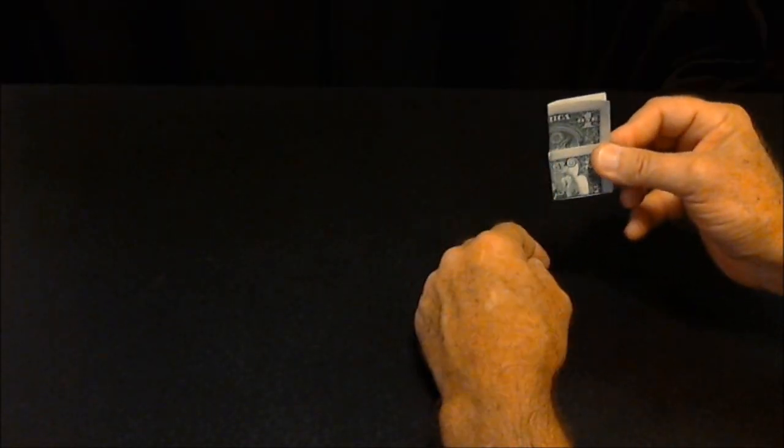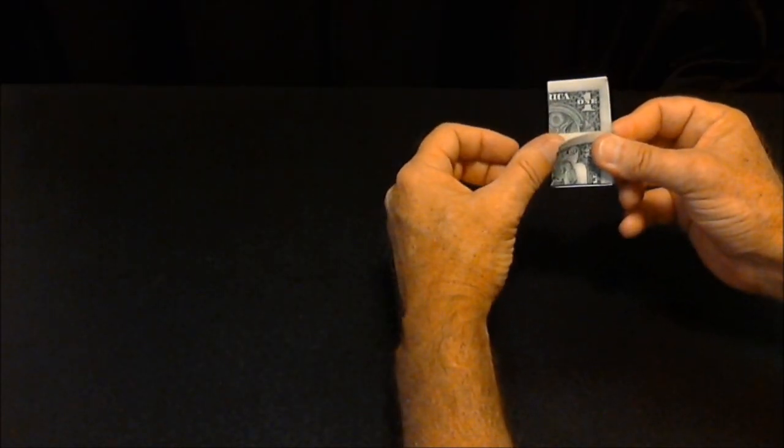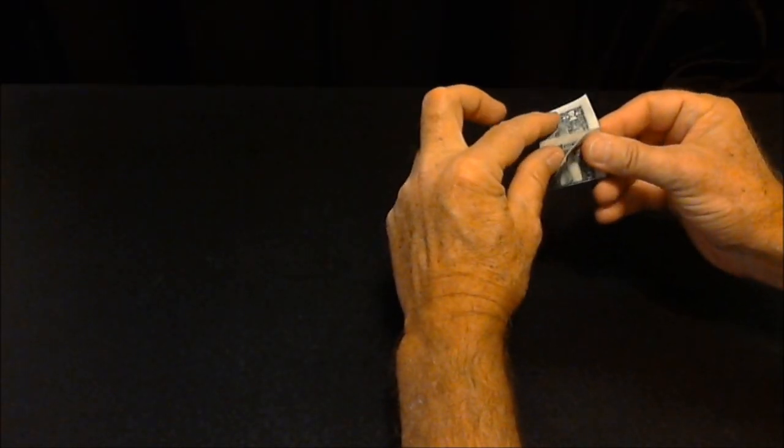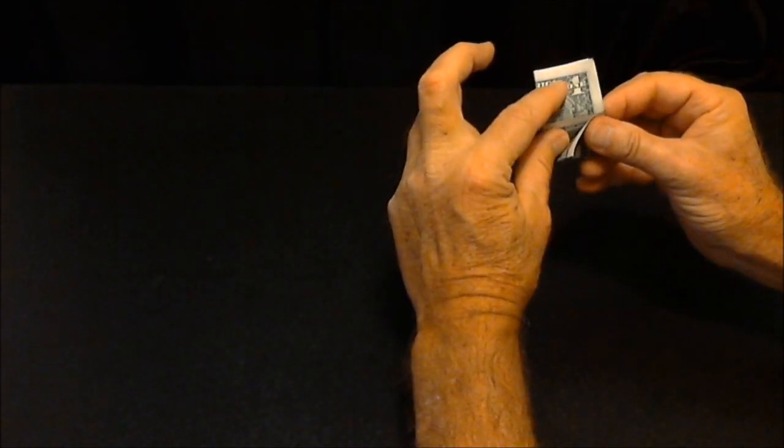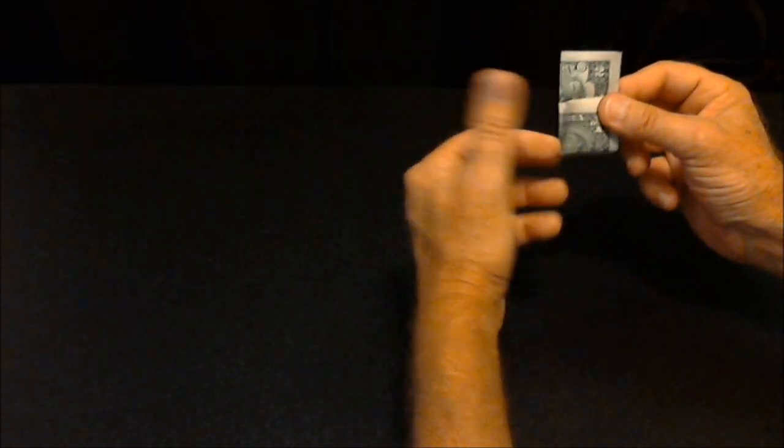Then you fold it. Fold it again. Take your thumb and pull this back. As you do that, you lower this as all one movement. Push this down and flip it around like that. And it will reverse the order. Then you open up your $2 bill.